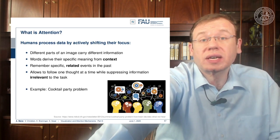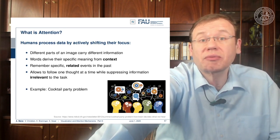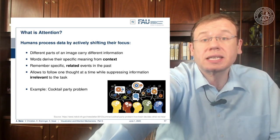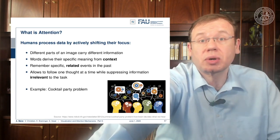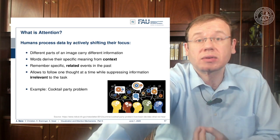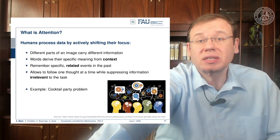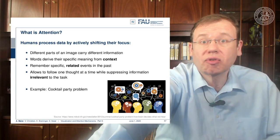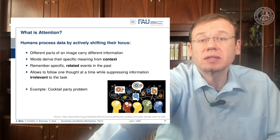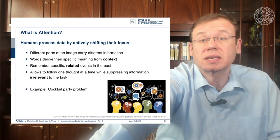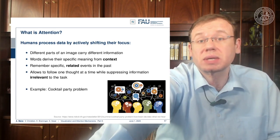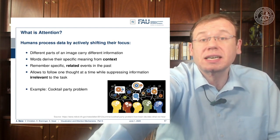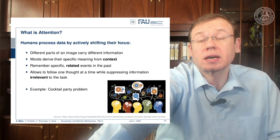One example is the cocktail party problem, where you have many different people talking and you focus on one person. By specific means like looking at the lips of that person, you can focus your attention, and you can use your stereo hearing as a kind of beamformer to only listen in that particular direction. You are then able to concentrate only on the single person you are talking to using this attention mechanism, which we do quite successfully — otherwise we would be completely incapable of communication during a cocktail party.